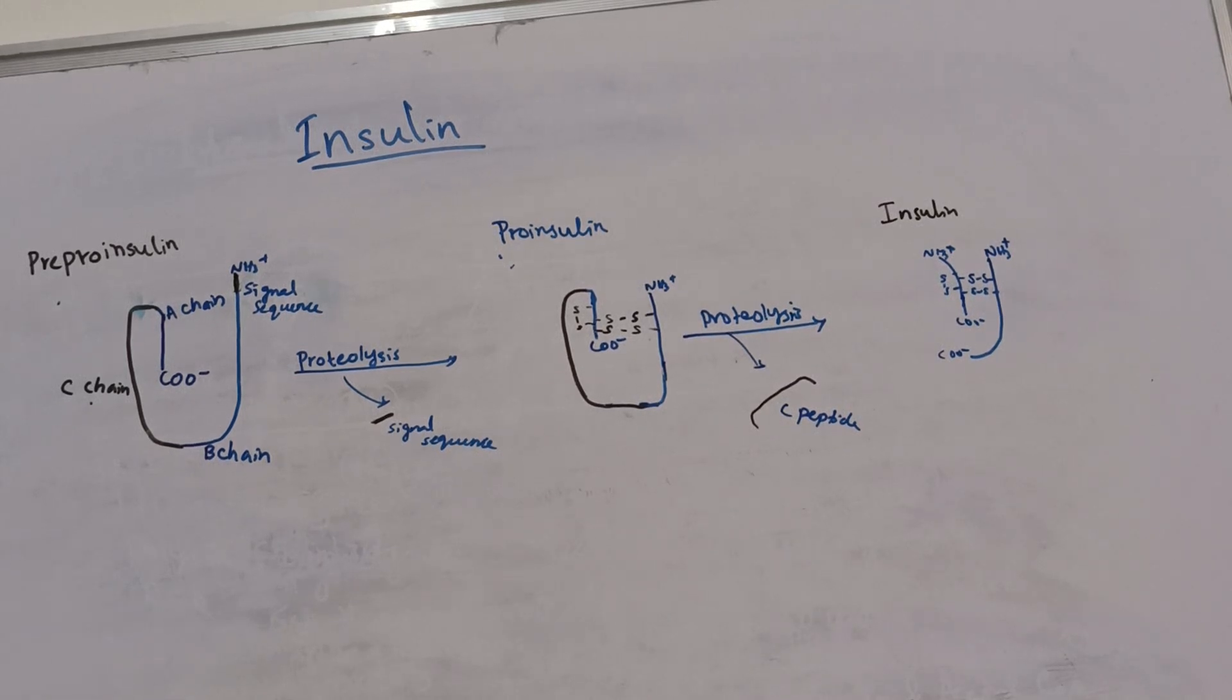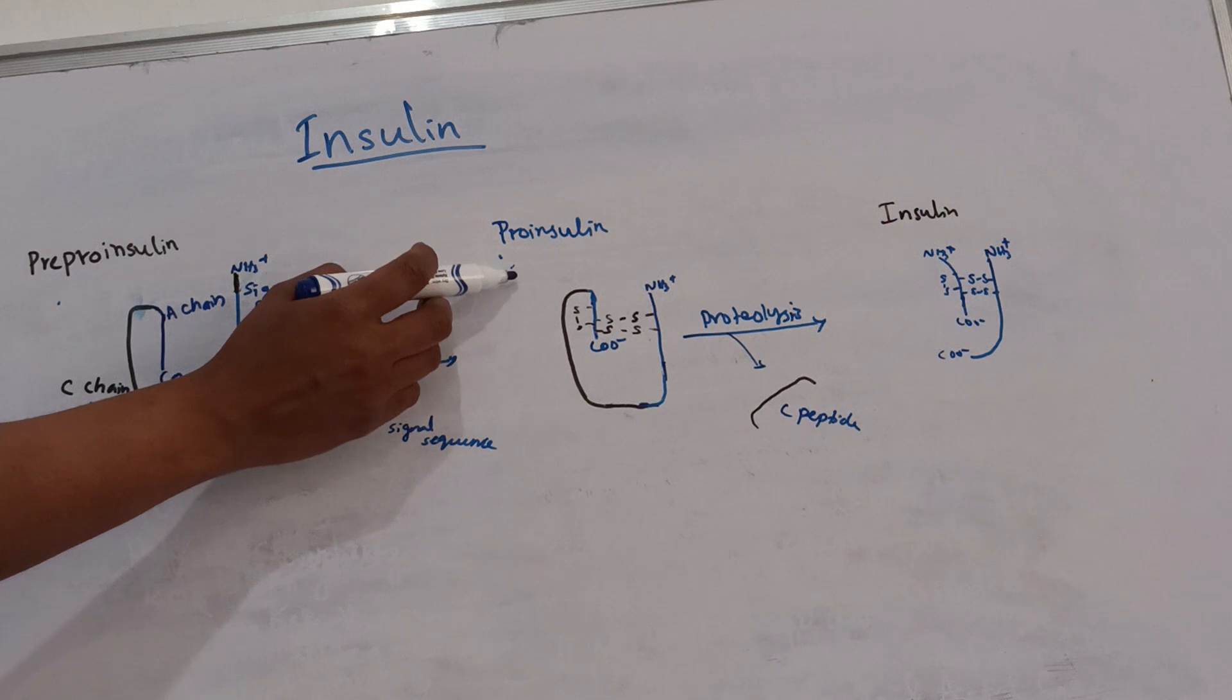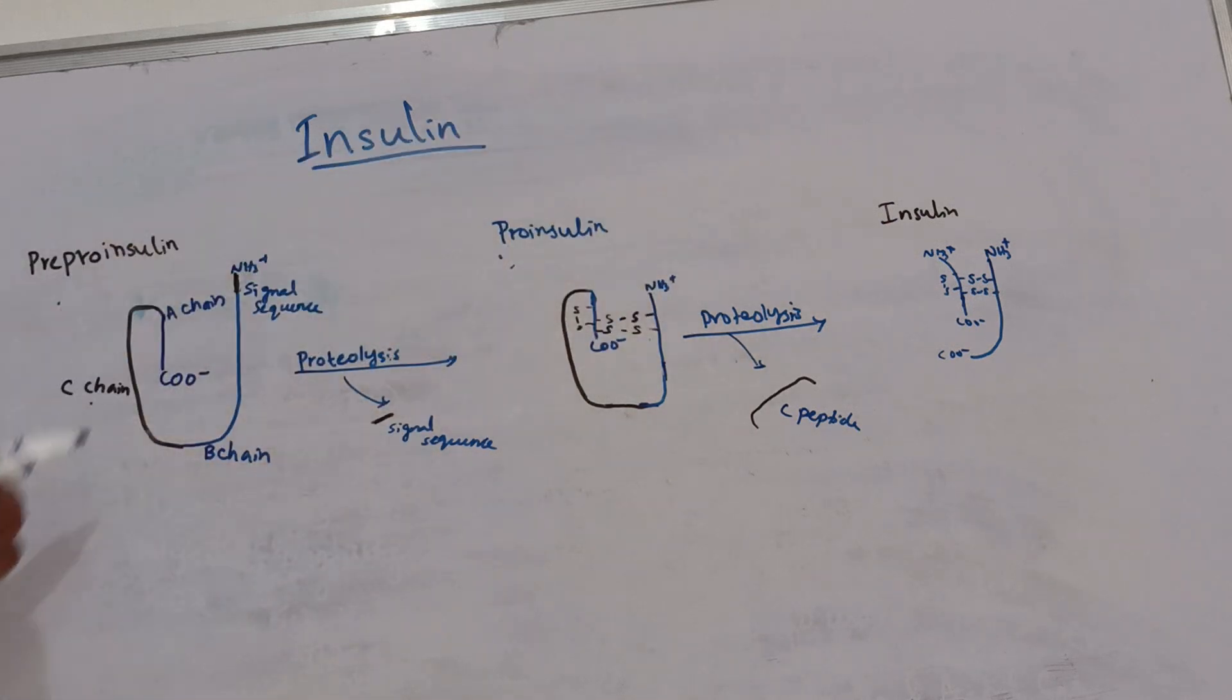Hello everyone, today we will discuss the biosynthesis of insulin. In the biosynthesis of insulin, first pre-proinsulin is formed which is converted to proinsulin and this will be finally converted to insulin.